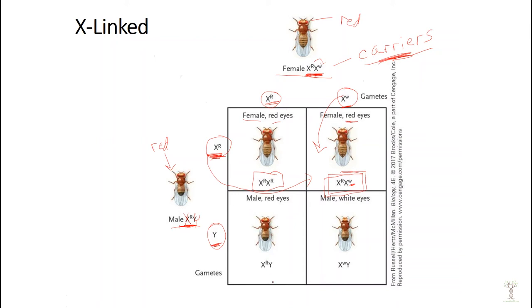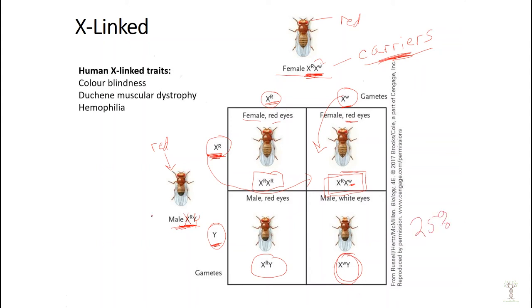Down here we have the red-eyed allele with the Y chromosome and the white-eyed allele with the Y chromosome. So what's the probability that these two red-eyed fruit flies can have white-eyed babies? 25%, and it will be male. There are some traits in humans that are on the X chromosome: color blindness, Duchenne muscular dystrophy, and hemophilia. In humans, all of those traits are recessive. So for a female to have one of those conditions she would need both X's to be mutated — it is possible, but it's just not as common.